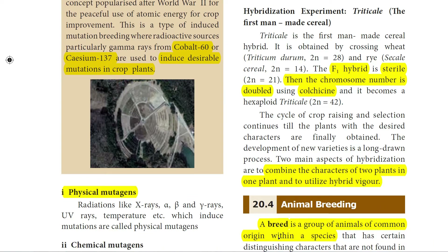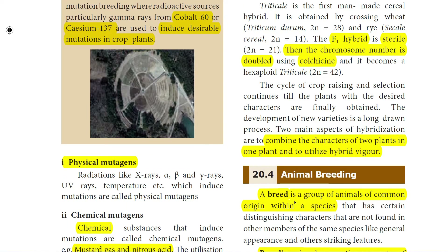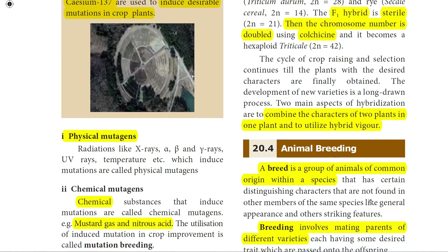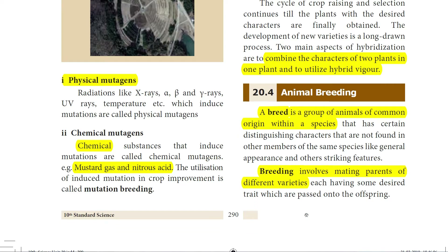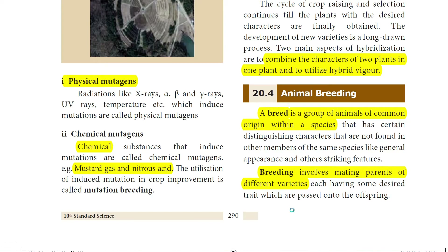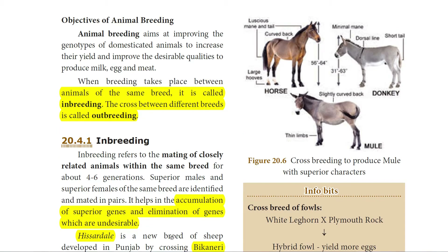Animal breeding: A breed is a group of animals of common origin within the same species. Breeding involves mating of parents of different varieties to obtain desirable traits from both parents in the offspring. Animal breeding aims to improve the genotype of domesticated animals to get better yield and desirable qualities — better milk, eggs, and meat. When breeding takes place between animals of the same breed, it is called inbreeding; when between two different breeds, it is called outbreeding.